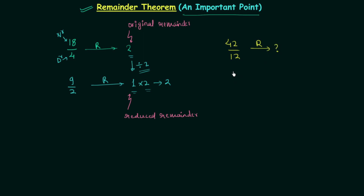The first thing you have to do is simplify: 42 and 12 are both multiples of 2, so we can write 42 as 21 and 12 as 6. Then 21 is a multiple of 3 and 6 is also a multiple of 3, so 21 becomes 7 and 6 becomes 2. We cannot simplify further, so the final division to perform is 7 divided by 2, and the remainder is equal to 1.